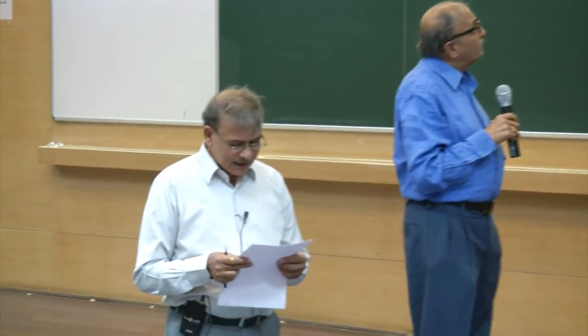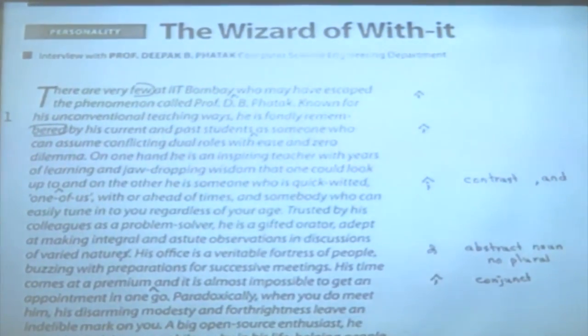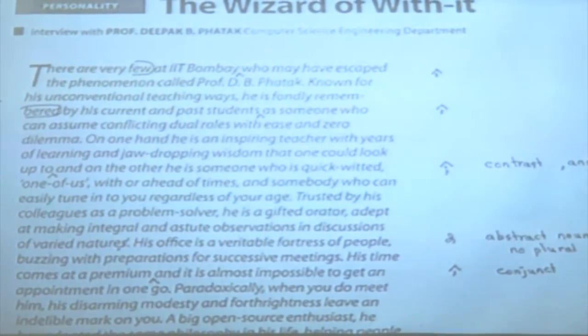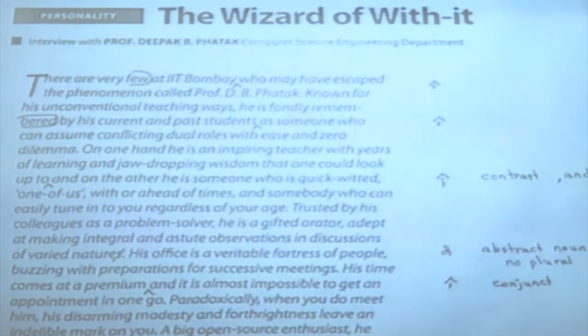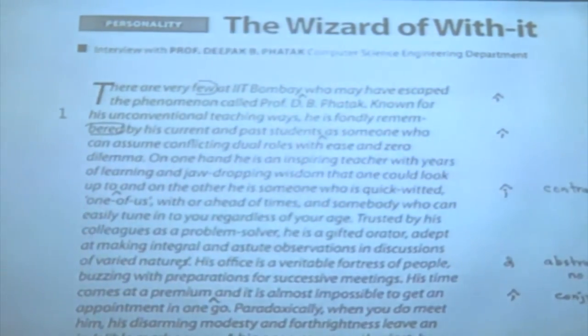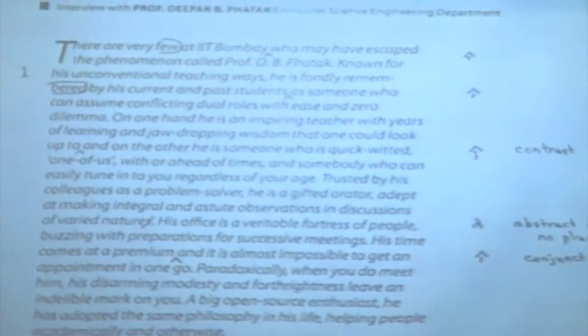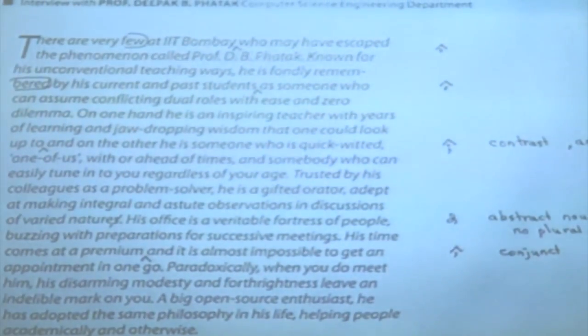First line: 'there are very few at IIT Bombay, comma, who may have escaped' — if you don't put the comma, it means 'Bombay who may have escaped,' connecting the next word to the previous. But this refers to 'there are very few,' so there is a comma. Then fourth line: 'remembered by his current and past students, comma, as someone who' — if you don't put the comma, it reads 'students as.' Then eighth line: 'one could look up to' — and on the other hand he is someone who is quick-witted. These are actually two half-sentences — one hand you can do this, on the other you can do that — a contrast between two clauses, so there should be a semicolon before the 'and.'